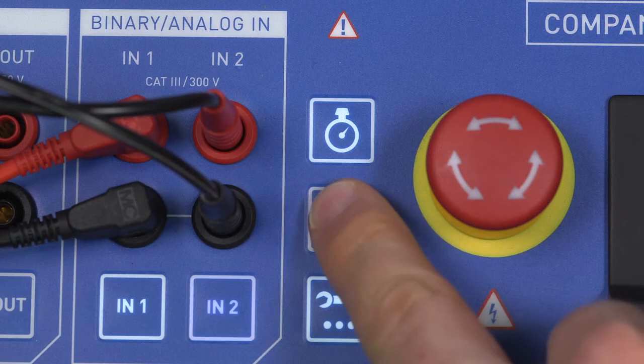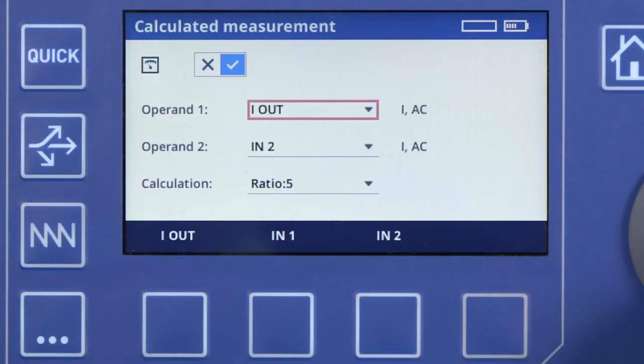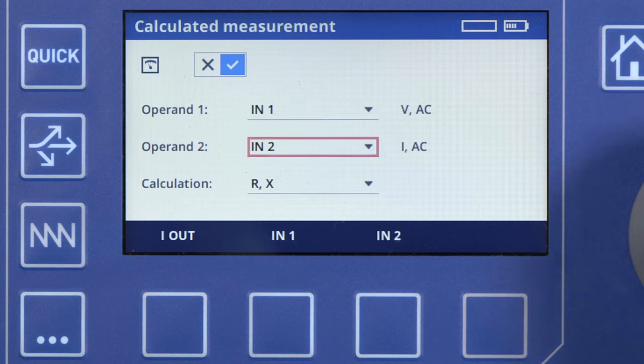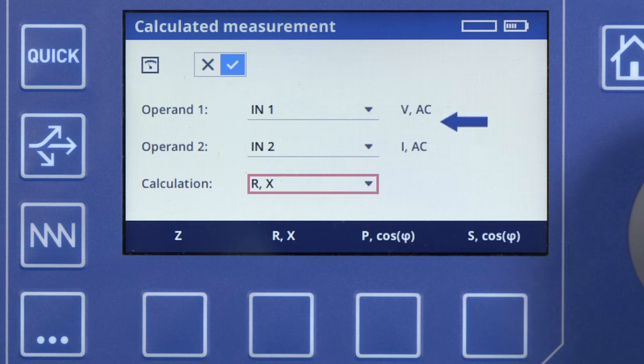Now configure the calculated measurement to apparent power by using the IN1 voltage as operand 1 and the IN2 current as operand 2. Since one operand is a current and the other is a voltage, we can select apparent power S for our calculation.